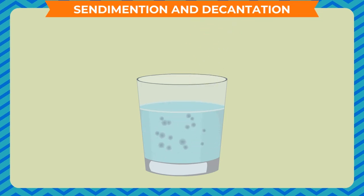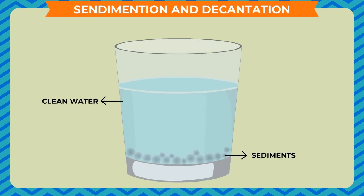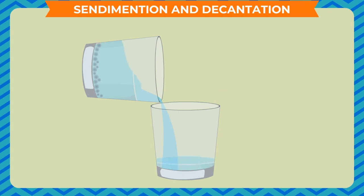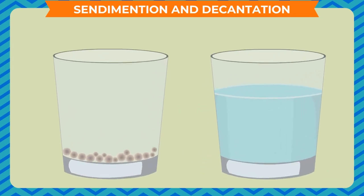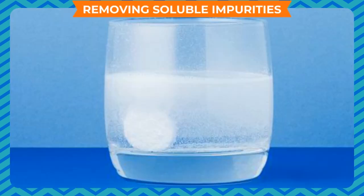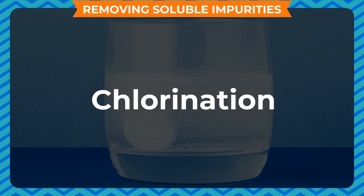Sedimentation and decantation: add some sand to a glass of water and stir it. Leave it for 15 minutes — you will see the sand particles settled at the bottom of the glass, and the water above the sand particles is clean. The sand that settles down is called sediment and the process is known as sedimentation. Now pour the clean water into another glass slowly without disturbing the sediment — this process of pouring water is called decantation.